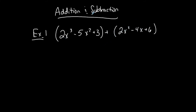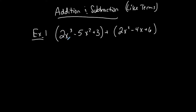To add and subtract polynomials, you want to think about like terms. You want to find what we call like terms. Like terms have the same variable and the same exponent on that variable. It doesn't have to have the same coefficient, but it has to have the same variable and same exponent.